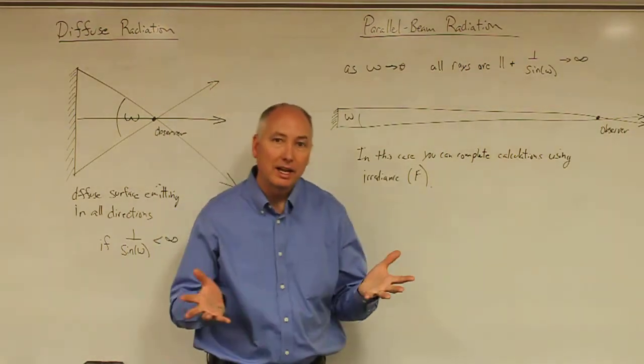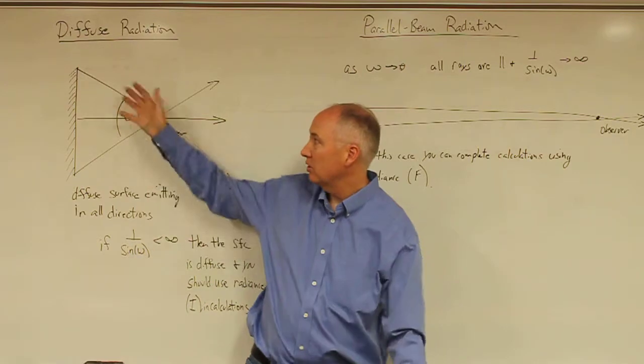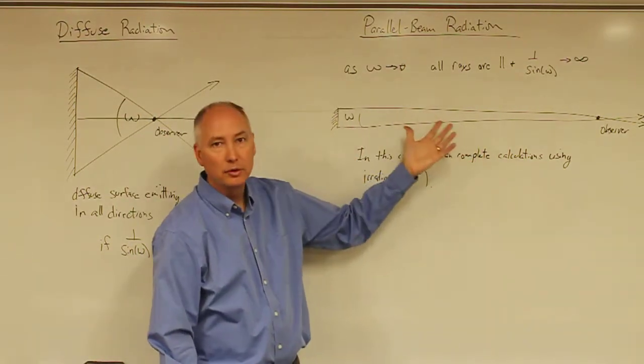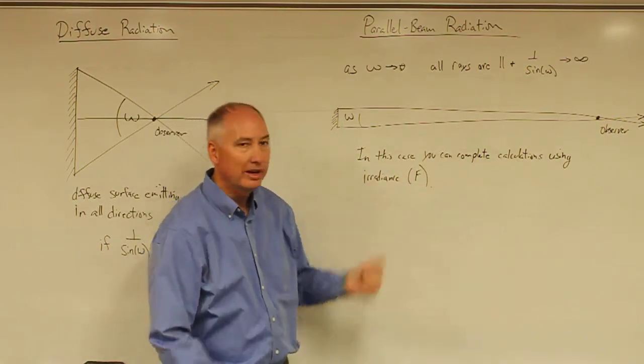So what I like to think of is that these are the two extremes. You're close to the object, you have to use diffuse. You're very far from the object, you have to use a parallel beam assumption, and you can use irradiance.